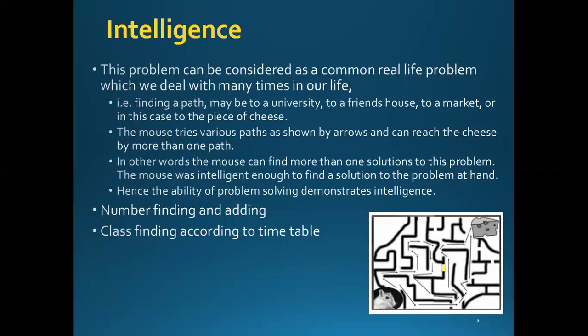So intelligence means using your knowledge and reasoning to solve problems. We use our intelligence in number finding — for example, 1, 3, 5 or 1, 5, 9, 10, 16 — what will be the next number? We also use intelligence in calculations, or in class-finding according to a timetable. For example, given a main university timetable, how do you find your class? For such problems, you use your intelligence. Therefore, intelligence can be described as the ability to perceive or infer information, retain it as knowledge, and apply it toward adaptive behaviors within an environment or context.